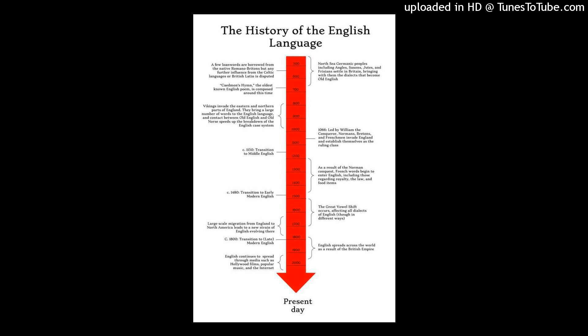Additionally, modern manuscripts often distinguish between velar and palatal C and G with diacritic dots above. Macrons were usually found in modern editions to indicate putative long vowels, while they are usually lacking in the originals. In older printed editions of Old English works, an acute accent mark was used to maintain cohesion between the Old English and the Old Norse printing.